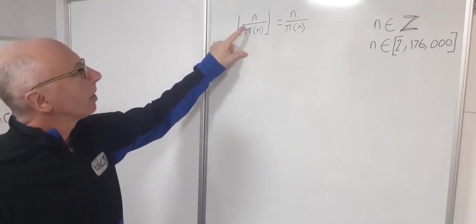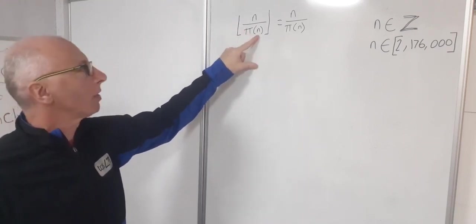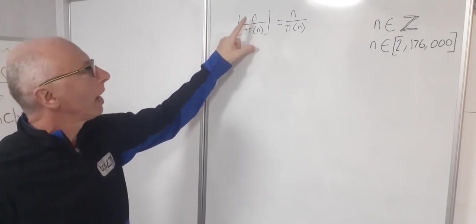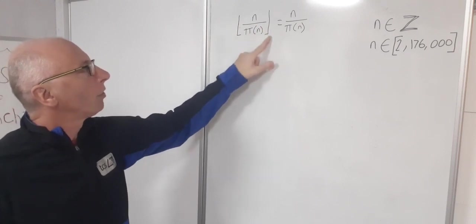So the number n divided by pi of n, prime counting function, so the number of primes up to and including this number n and notice this is the floor function.